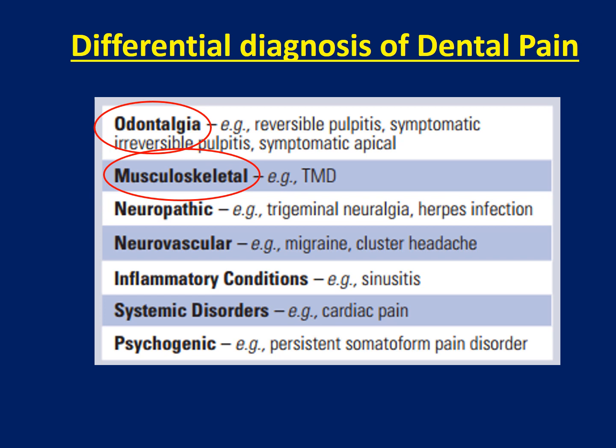Musculoskeletal pain such as TMJ dysfunction syndrome. Neuropathic pain such as trigeminal neuralgia and herpes infection. Others include neurovascular, inflammatory conditions, systematic disorders, and psychogenic causes. They are all present, which is why we must perform a good differential diagnosis to differentiate dental pain from the others.